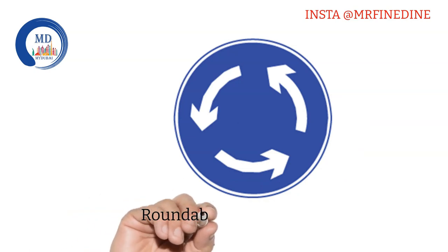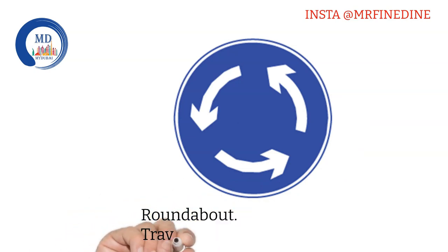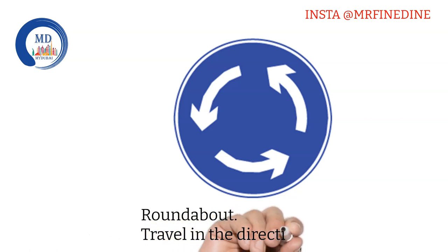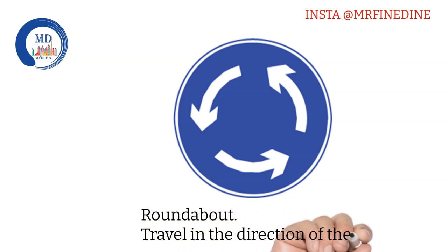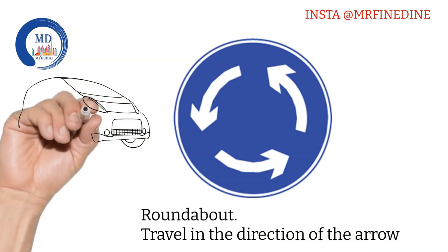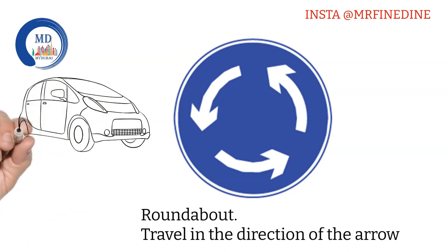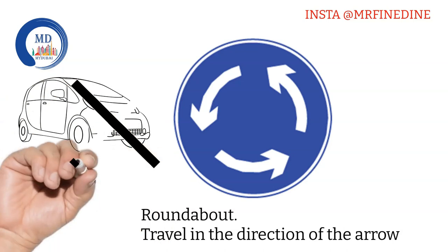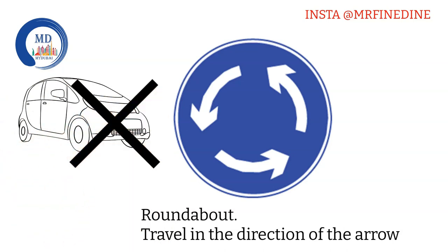That is a roundabout sign with the arrow showing the direction in which you need to move — so you need to travel in the direction of the arrow. One important roundabout rule is that when you are entering a roundabout, you need to keep in mind that there should not be any car coming from your left or entering from the left, because the car on the left always has priority. So if you see any car from the left, you need to stop and give way to it.